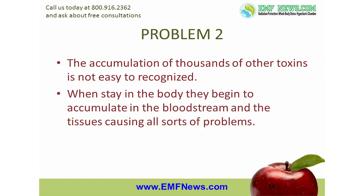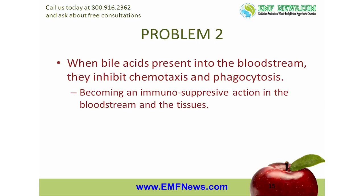The last problem caused by bile backing up into the bloodstream has to do with immune function. As we said earlier, bile plays an important role in the immune system of the intestines by keeping it from becoming overly aggressive. Unfortunately, what is good for the immune system of the intestines is terrible for the rest of the body. Studies have shown that when bile acids are present in the bloodstream, they inhibit chemotaxis and phagocytosis — the processes by which white blood cells locate, move towards, and swallow infectious microbes. Thus, what starts out as a beneficial immunoregulative action in the intestines becomes an immunosuppressive action in the bloodstream and tissues.